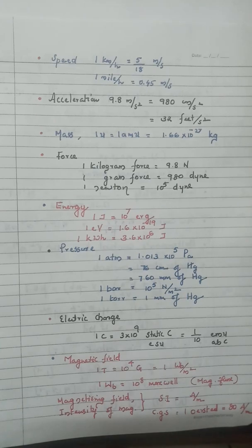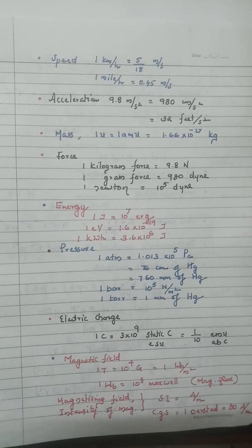For mass: one amu equals 1.6 × 10⁻²⁷ kilogram.